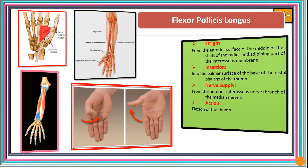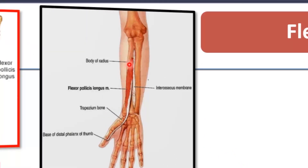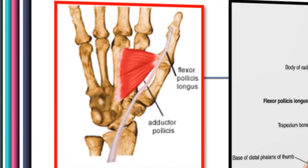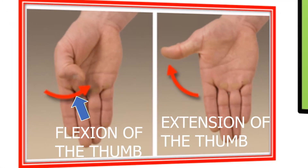Before closing this section, we look at flexor pollicis longus. Its origin is from the anterior surface of the middle of the shaft of the radius and the adjoining part of the interosseous membrane. It inserts into the palmar surface of the base of the distal phalanx of the thumb, doing similar work to flexor digitorum profundus but for the thumb. Its nerve supply is the anterior interosseous nerve, a branch of the median nerve, and its action is flexion of the thumb.